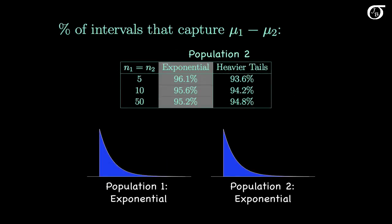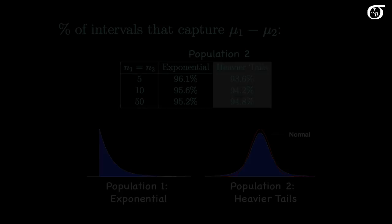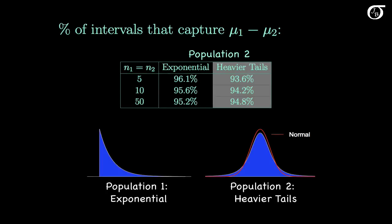When both populations have an exponential distribution, the coverage percentages are actually a little bit greater than 95% — we see 96.1% when both sample sizes are 5 — but again they tend towards 95% as sample sizes increase. If one is exponential and the other has heavier tails than normal, the situation is a little bit worse, with coverage down to 93.6% for sample sizes of 5. It moves up towards 95% pretty quickly, and even 93.6% isn't too bad.